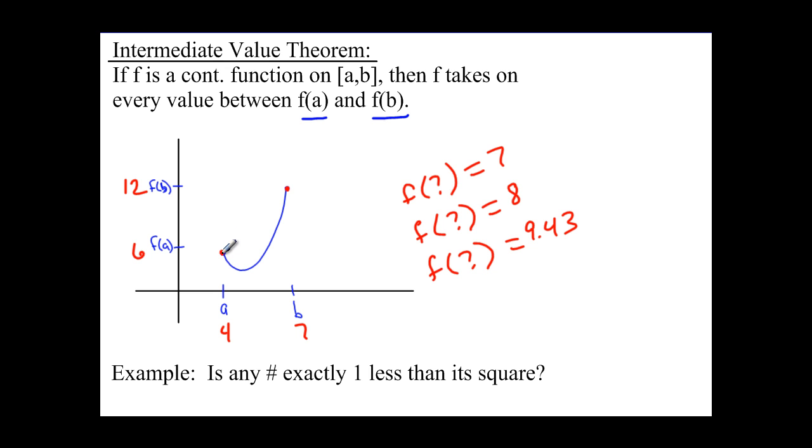Now, we could have the values only 6 to 12 by drawing a graph like that. We could have more than 6 to 12 by drawing a graph that goes clear up here and then back down. So we're not guaranteed anything outside of 6 to 12. We're just guaranteed by the intermediate value theorem that we will have all the values between 6 and 12.